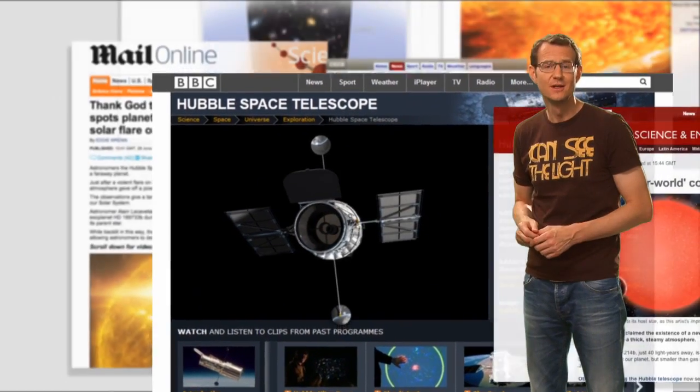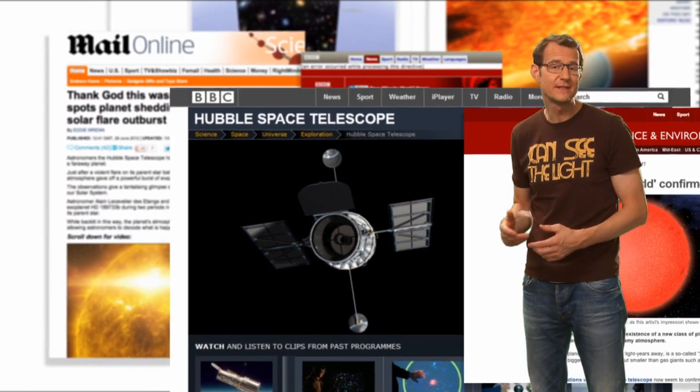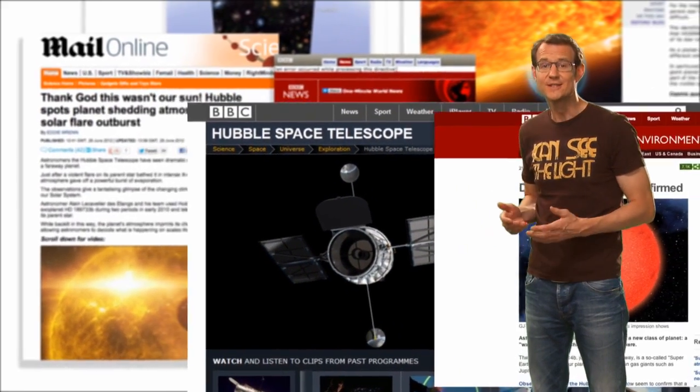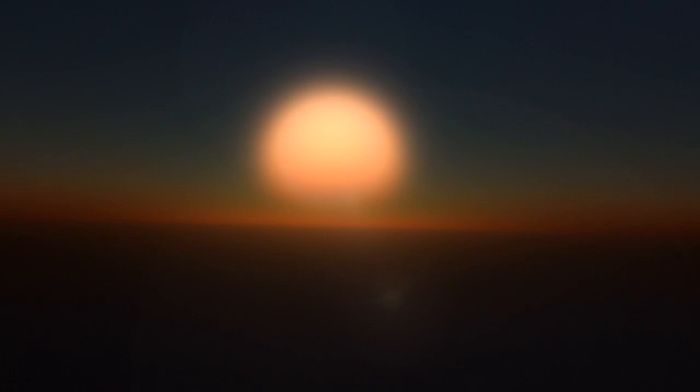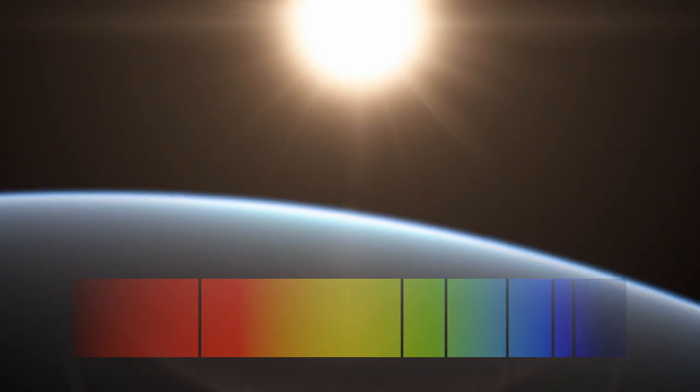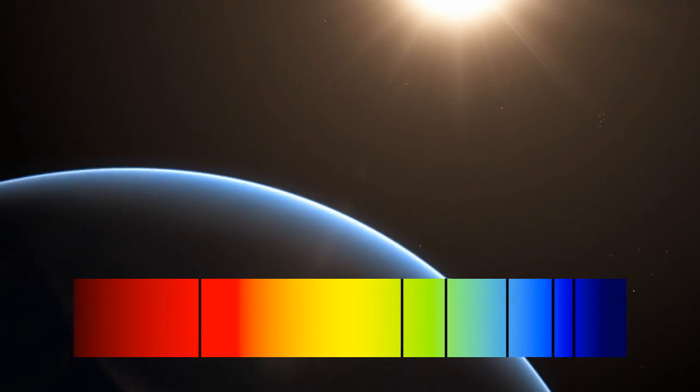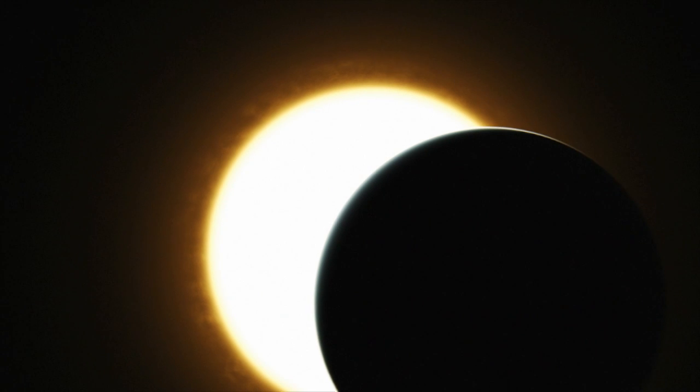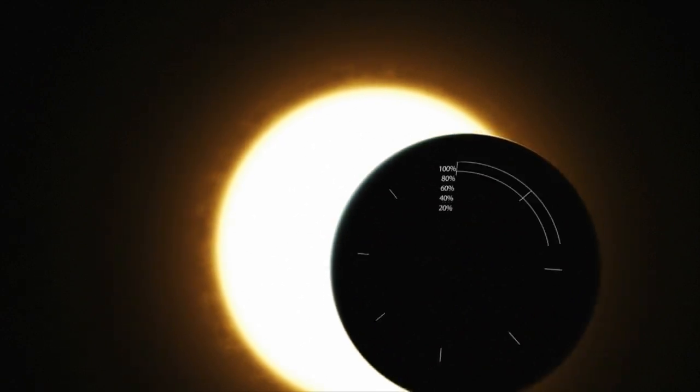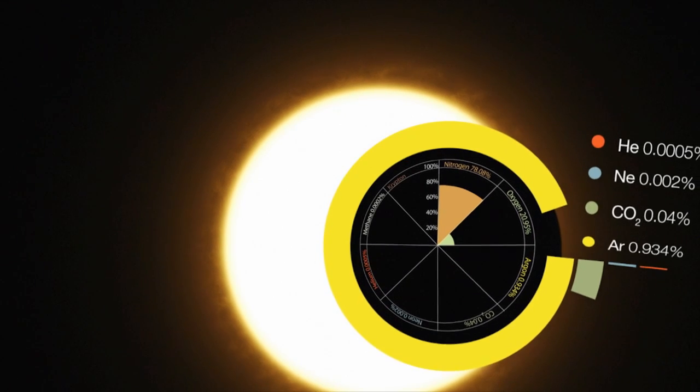It is these measurements that lie behind some of Hubble's most fascinating discoveries, such as the detection of different gases in the atmospheres of exoplanets. As a star's light passes through an exoplanet's atmosphere, the chemical signature of the atmosphere is imprinted on the light as dark lines in its spectrum. These lines tell scientists precisely what gases are present in the planet's atmosphere.